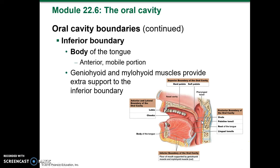Continuing with the oral cavity boundaries, at the inferior boundary we have the body of the tongue, the anterior mobile portion. We have the geniohyoid and mylohyoid muscles that provide the extra support for the inferior boundary.